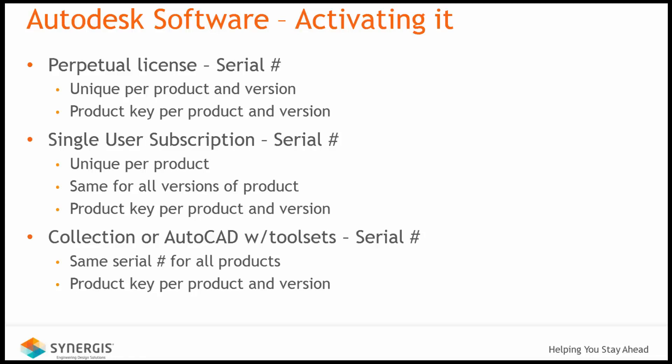Let's finish with additional information regarding the serial number and product key activation method. When you have a perpetual license, the serial number assigned to you is unique per the given Autodesk product and year version you're trying to activate. Although the product key is standard for everybody, it is still unique to the given product and version you have. When it comes to subscription-based products — excluding collections and AutoCAD toolsets for now — the serial number is still unique to the product you're trying to install, but it remains the same no matter what version you're installing, unlike a perpetual license.